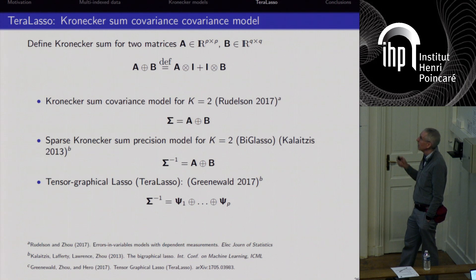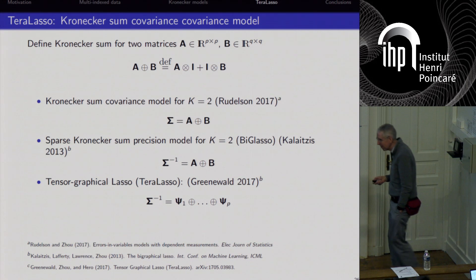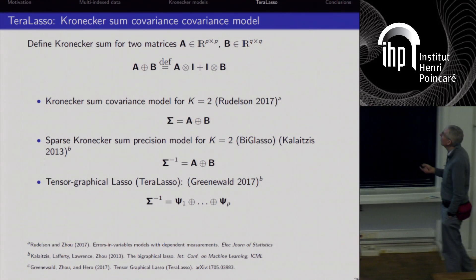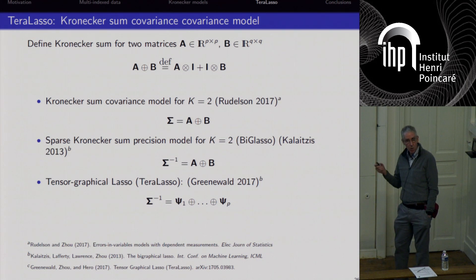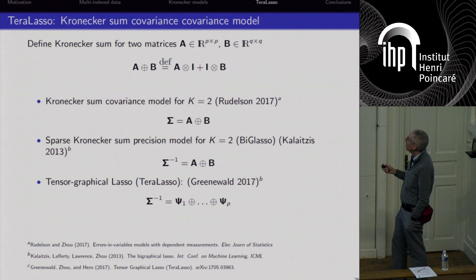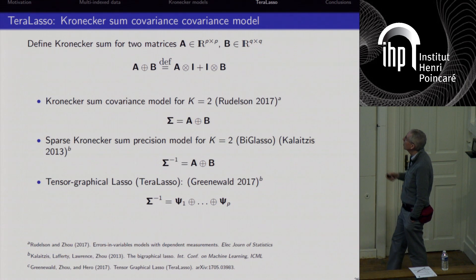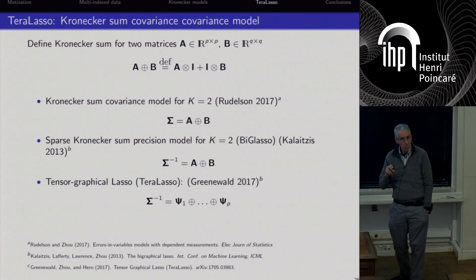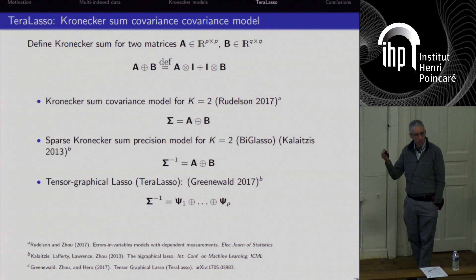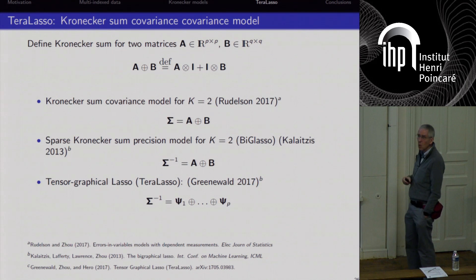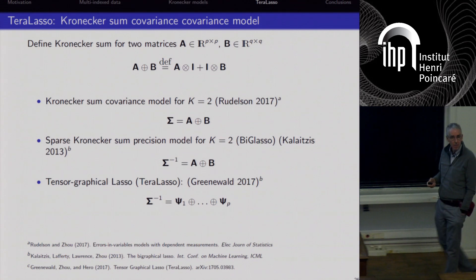Now, what about the Terra Lasso? As an alternative to the non-convex bilinear Kronecker product representation A Kronecker B, we use a Kronecker sum representation, which is linear in A and B. The left and right factors are added together — A Kronecker I plus I Kronecker B — making the objective function convex in A and B. This retains the same number of parameters in A and B as distinct elements, but now the problem is linear and convex, which is a big advantage.